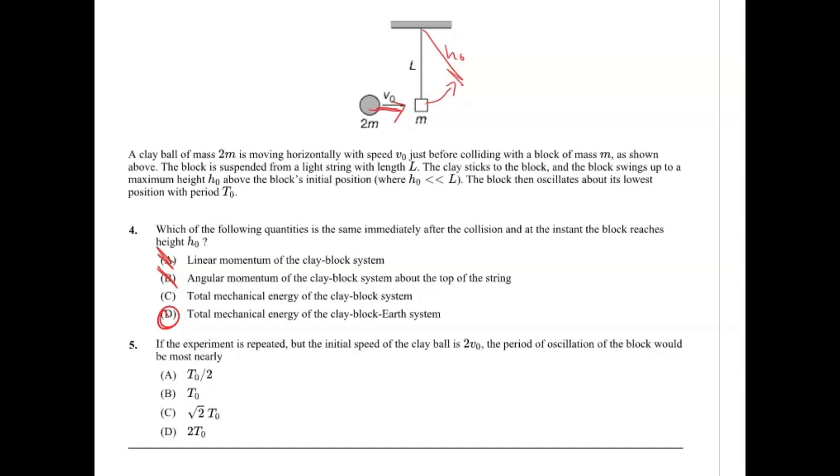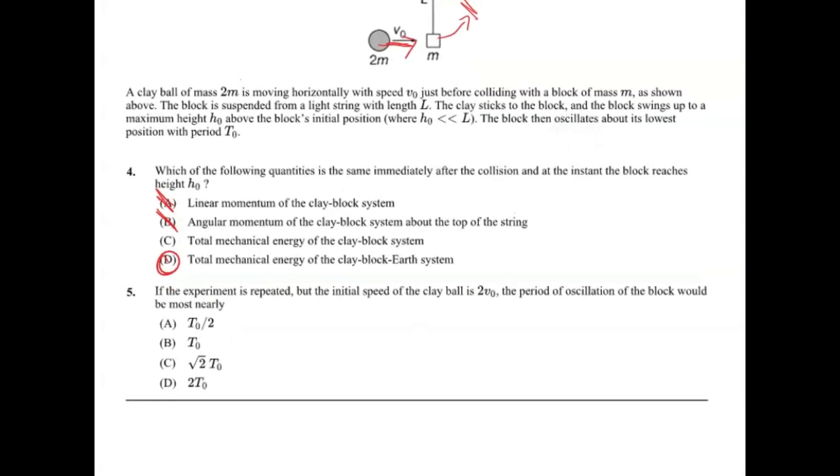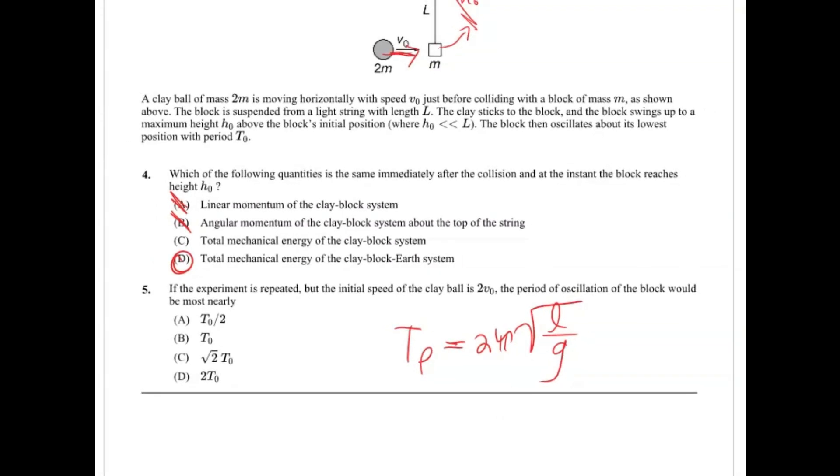For five, it says if the experiment is repeated, but the initial speed of the clay ball is double the velocity, the period of oscillation of the block would be most nearly what? So the equation for period of oscillation of a pendulum is 2π multiplied by the square root of length of the string over g gravitational constant. So if we look at our equation, the velocity really has nothing to affect it. It's not going to affect the length of the string. It's not going to affect the gravitational constant at all.